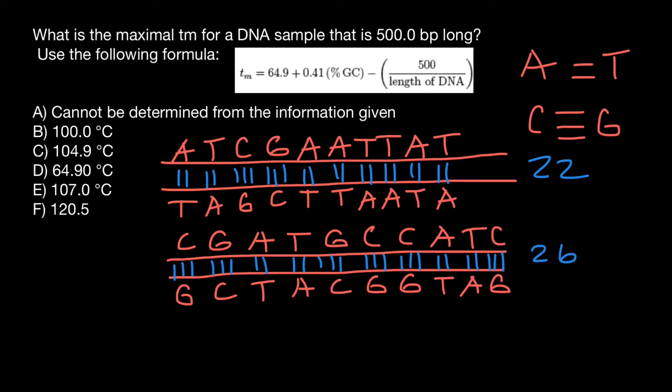Why this information is important? It is important because we need to set a certain temperature for, for example, polymerase chain reaction. Now let's return to our problem. What is the maximal melting temperature for DNA sample that is 500 base pairs long? Let's use this information, 500 base pairs long, and let's put it here in our formula. 500 goes here.